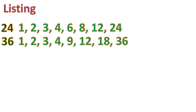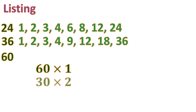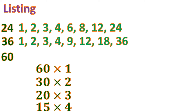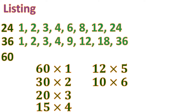Next, we find the factors of 60. Let's find all the pairs: 60 times 1, 30 times 2, 20 times 3, 15 times 4, 12 times 5, and 10 times 6. All these pairs give a product of 60.